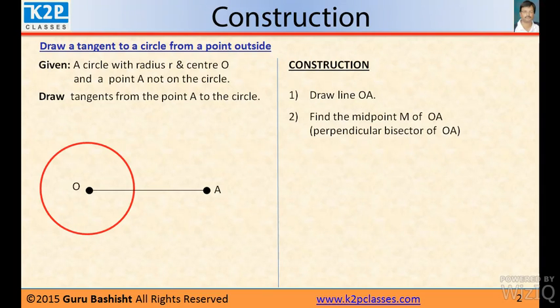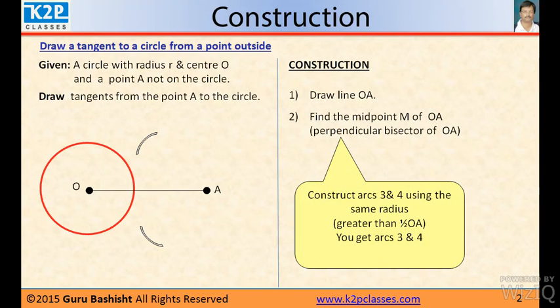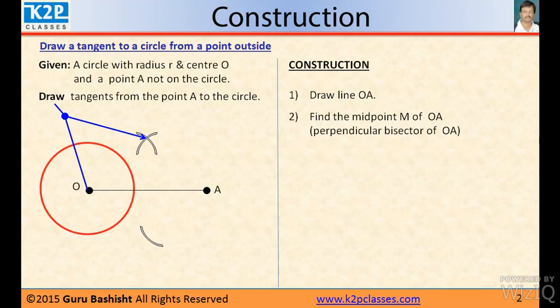Second, find the midpoint M of OA, that is perpendicular bisector of OA. And I know in class 9 you must have read how to draw a perpendicular bisector. With the same radius from point O, cut and then join these two points.